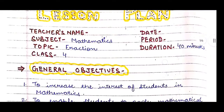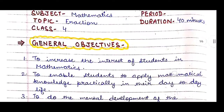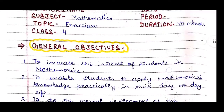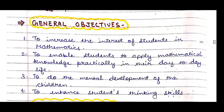Firstly we'll write general objectives. General objectives are written according to the subject. The first one is to increase the interest of students in mathematics. Second, to enable students to apply mathematical knowledge practically in their day-to-day life. Third, to do the mental development of the children. Fourth, to enhance students' thinking skills.